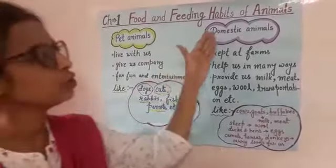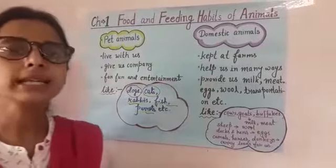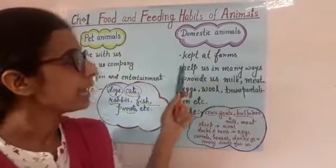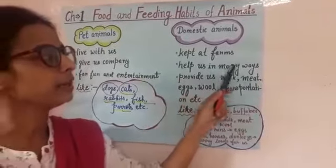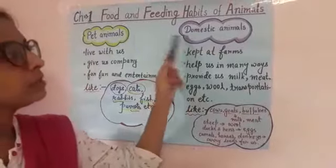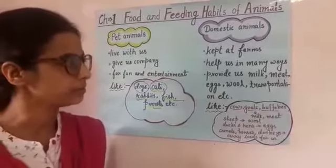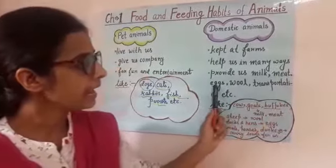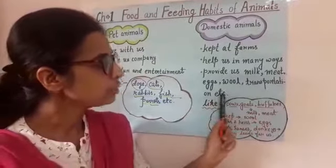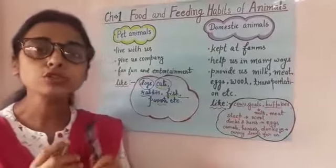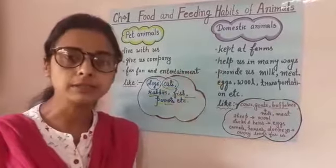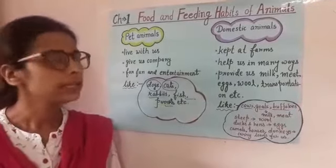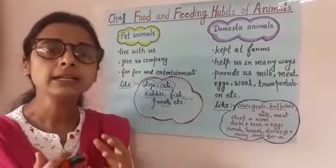Now let us discuss about domestic animals. Domestic animals are those animals that are kept at farms and they help us in many ways. That's why domestic animals are also called farm animals. They provide us with milk, meat, eggs, wool, transportation, etc. It is also very important to take care of these animals and give them proper food and shelter so that they can be healthy and active.